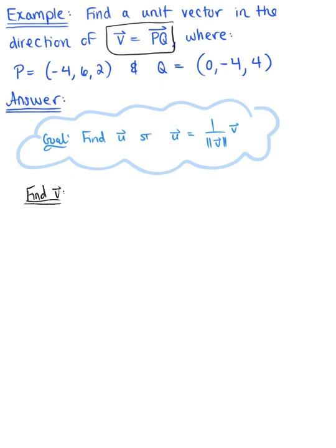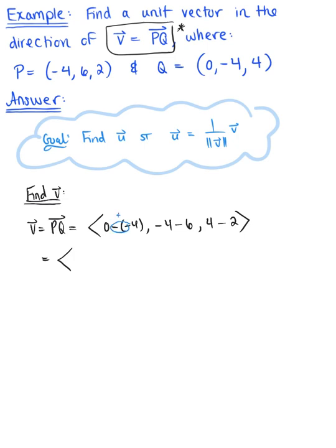Vector v is defined by the directed line segment PQ, so vector v equals PQ, and we know this is going to be terminal minus initial. We have 0 minus (-4) for the x component, negative 4 minus 6 for the y component, and 4 minus 2 for the z component. This simplifies: a negative times a negative gives positive 4, negative 4 minus 6 gives -10, and 4 minus 2 gives 2.